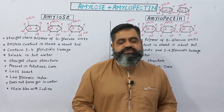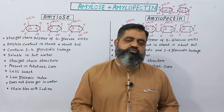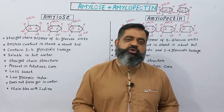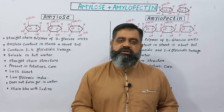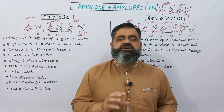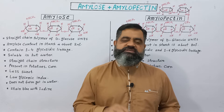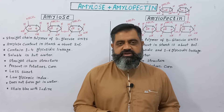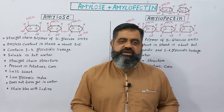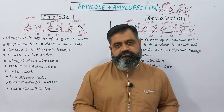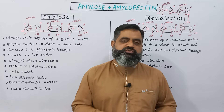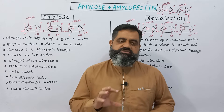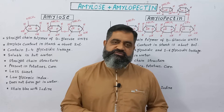Hello to all students. In this video lecture, we are going to discuss the difference between amylose and amylopectin. Amylose and amylopectin are two types of starches which are present in fruits, vegetables, and cereals. These are very important types of carbohydrates which include polysaccharides. We consume these starches on a daily basis to get energy.